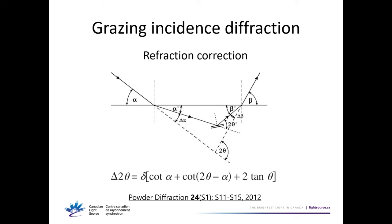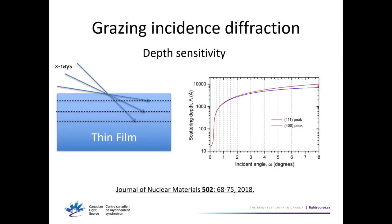The refraction correction gives a shift in measured peak positions depending on delta from the refractive index of the material, the incidence angle, and the two-theta. These shifts can be as high as 0.01 degrees in your measured peak position. So if you are interested in accurate lattice parameters, make sure you apply corrections. Also, by tuning the incidence angle with grazing incidence, you can gauge different depths in your sample — deeper or shallower — by controlling this incidence angle.